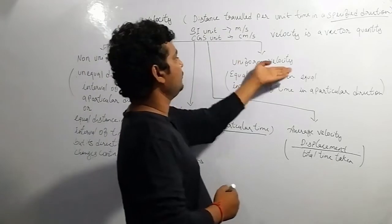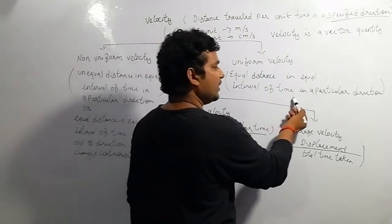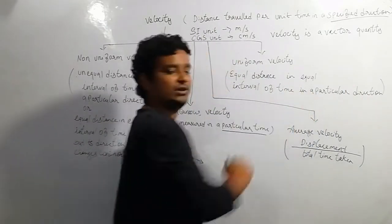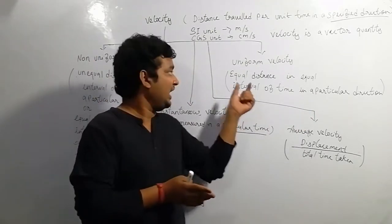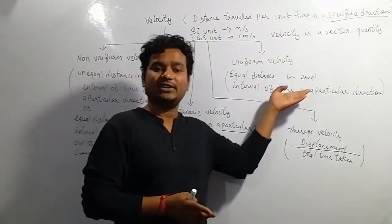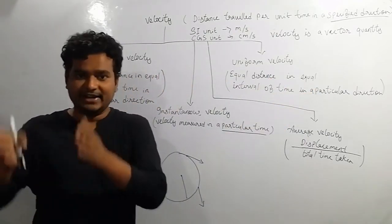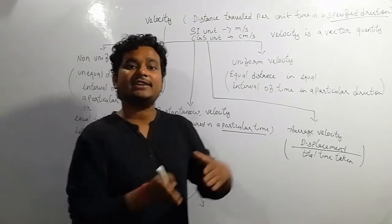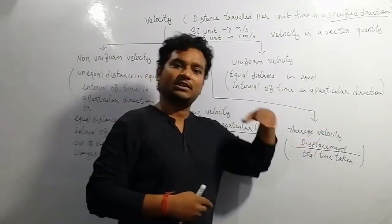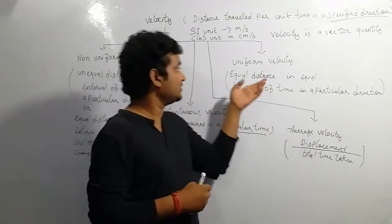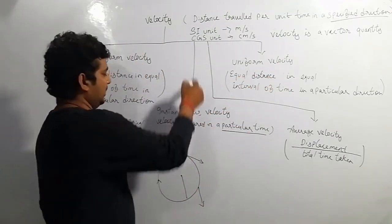Now, uniform velocity means equal distance in equal intervals of time in a particular direction. When a body travels in a fixed direction and covers the same distance each second — in the first second, second second, and third second — that is called uniform velocity.